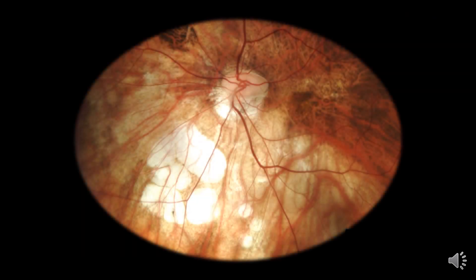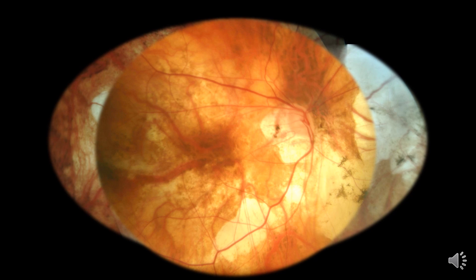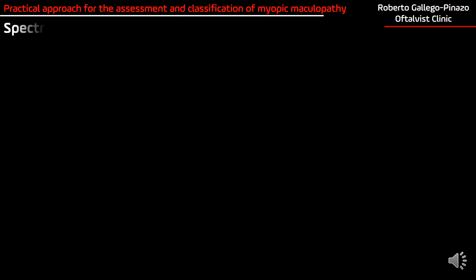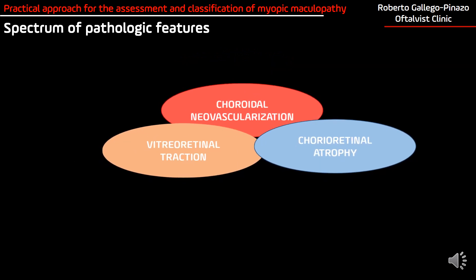When we face a fundus like this, it's very likely that we will not agree on how we call each one of the signs that we can see. High myopia is a very complicated disease with a myriad of signs in the fundus examination and the OCT examination. There is a wide spectrum of pathologic features that we can summarize in choroidal neovascularization, vitreoretinal traction, and chorio-retinal atrophy — and all these changes can take place in the same patient.